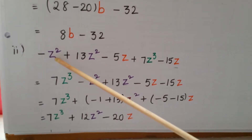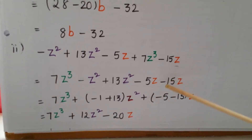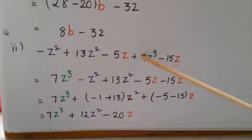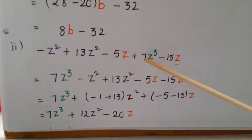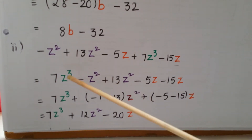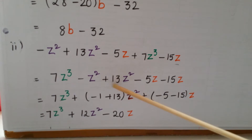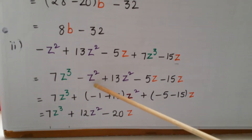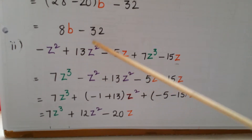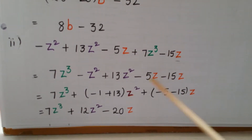Underline the same like terms: minus z² and plus 13z² are like terms; minus 5z and minus 15z are like terms. Write all like terms at one place. 7z³ is the only term with z³. Then write z² terms together and z terms together, ordering by descending power.